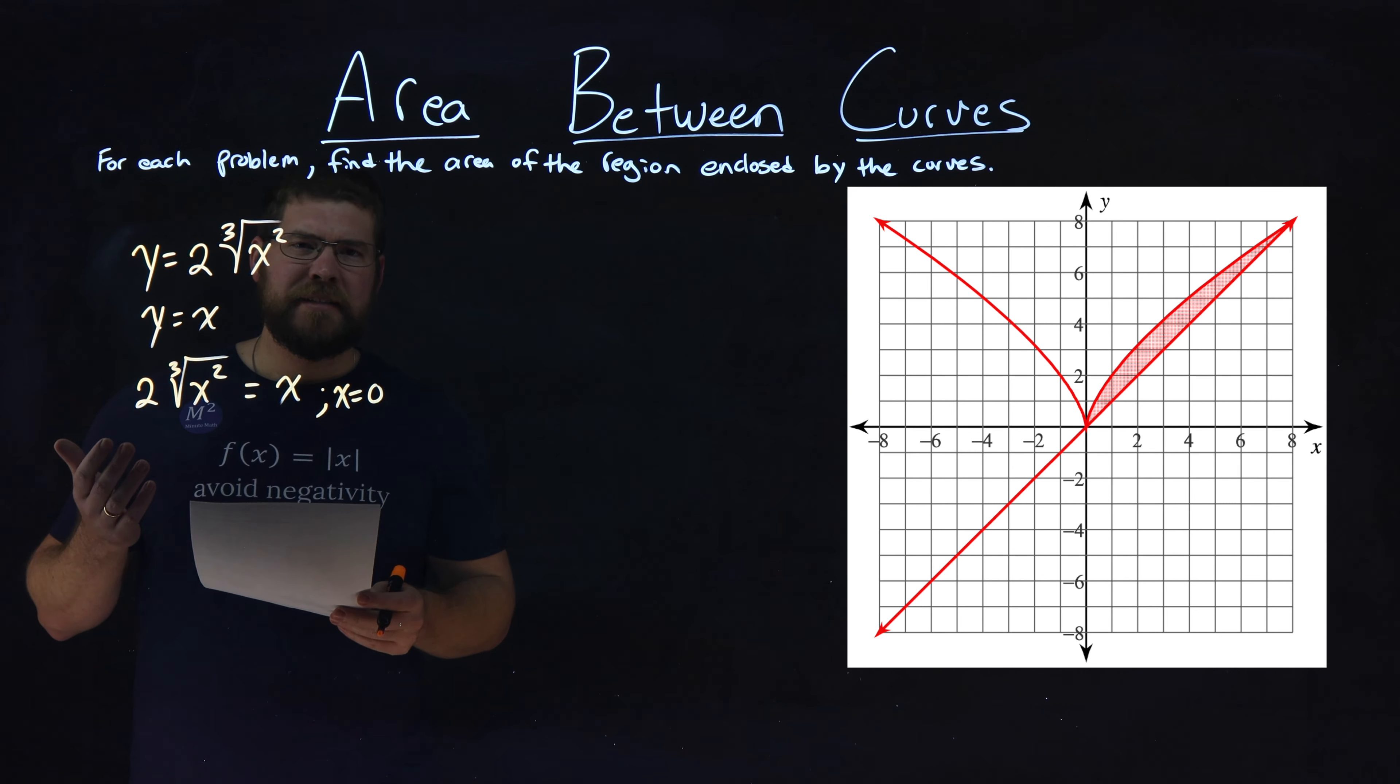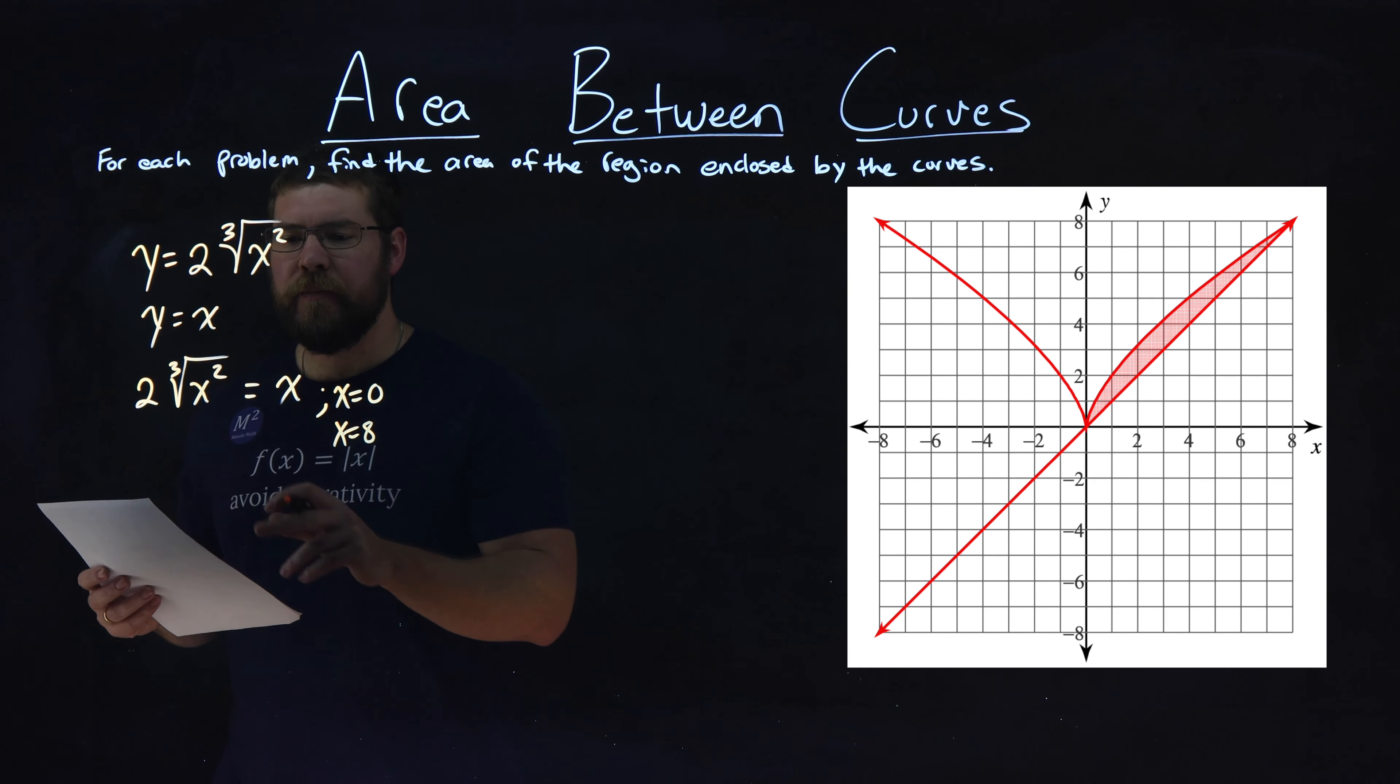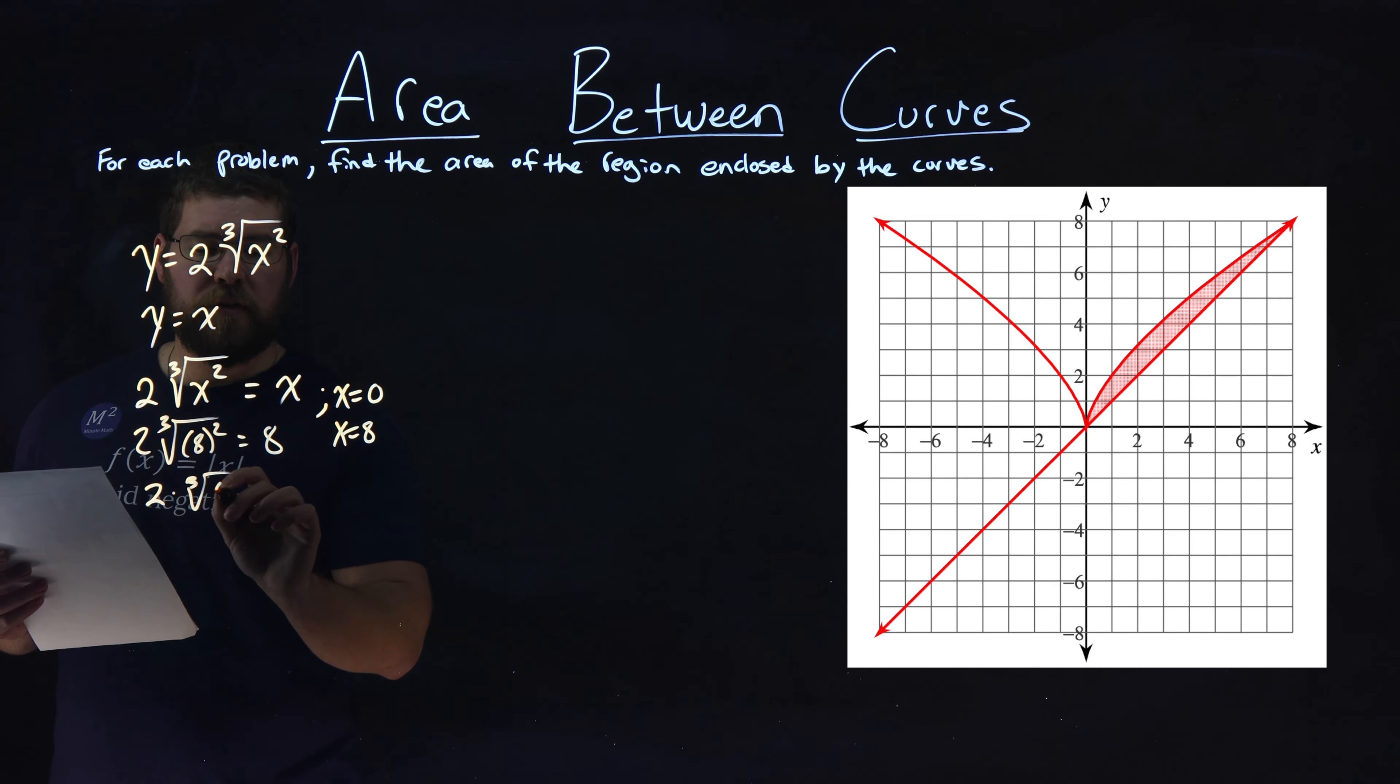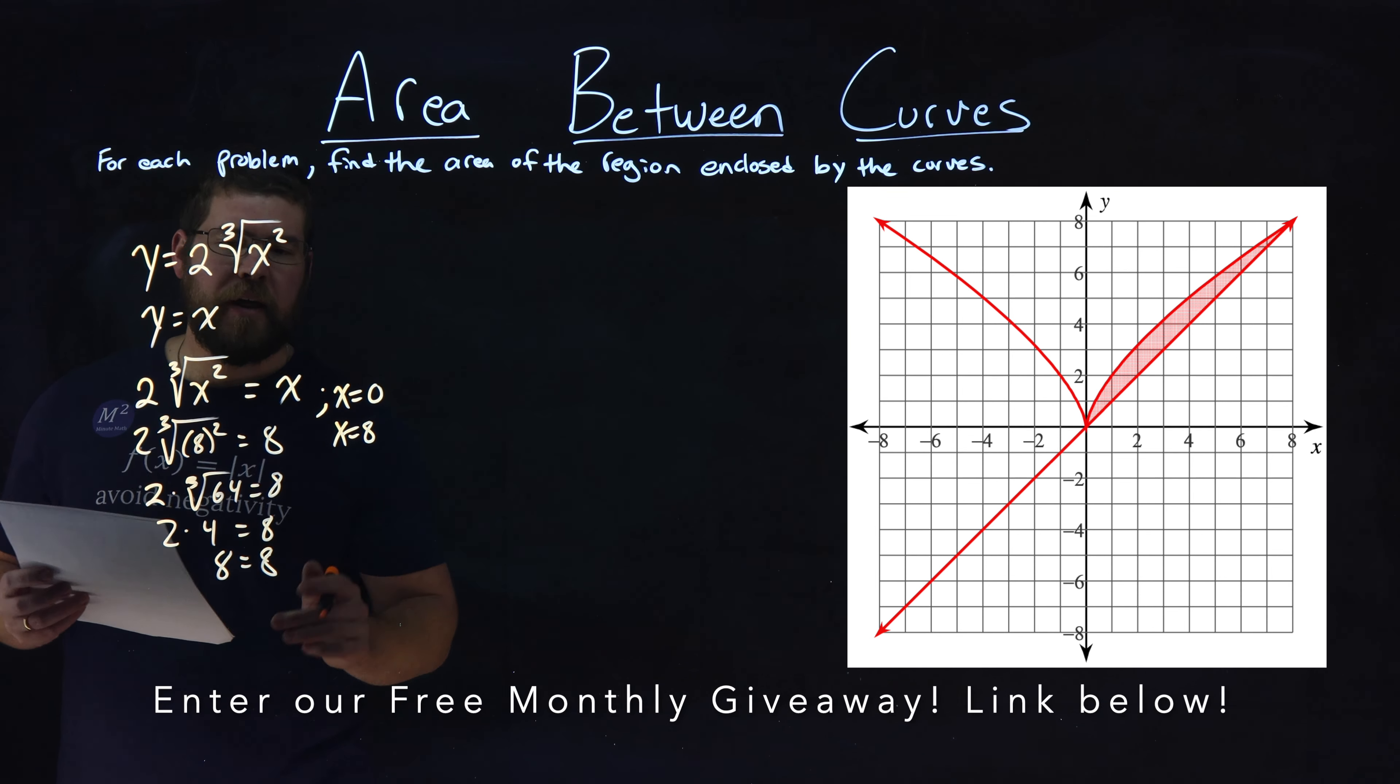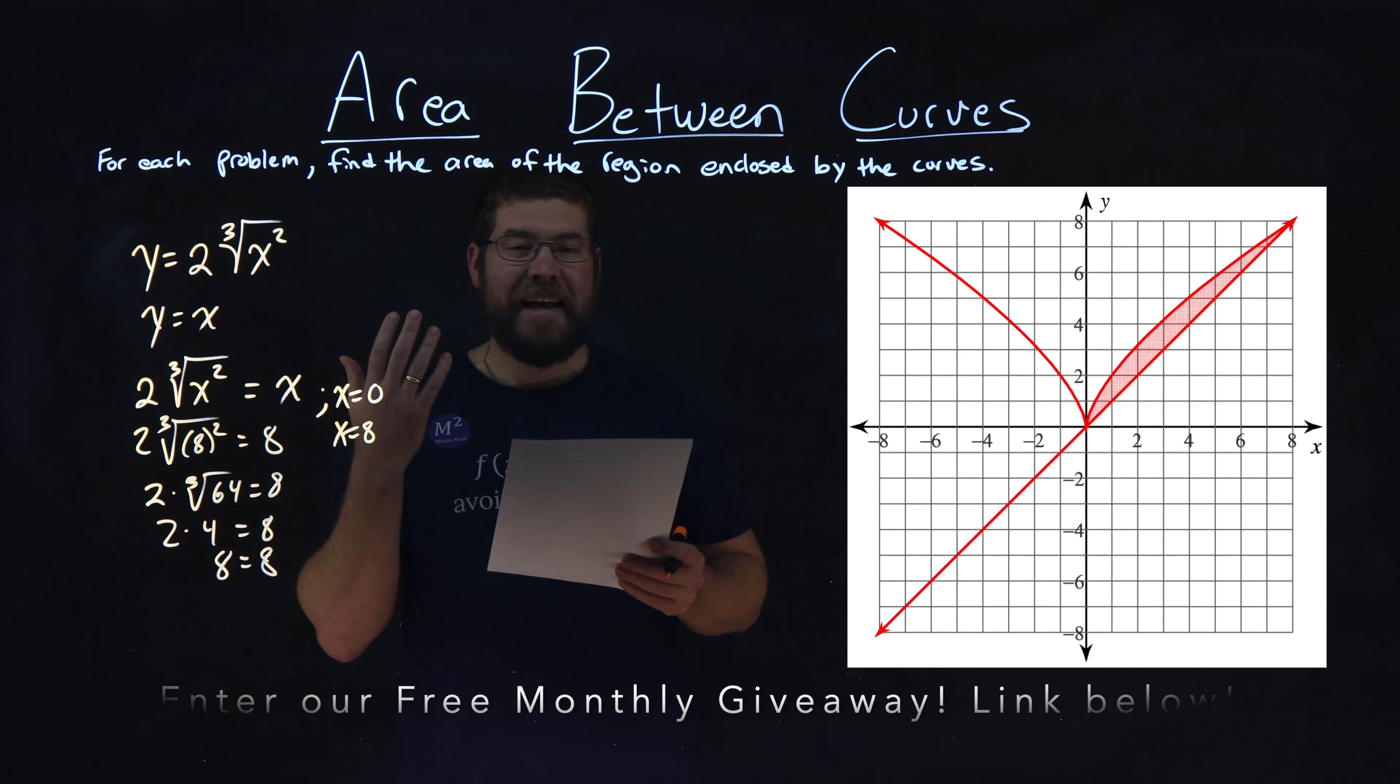The second one actually happens when x equals 8. We can see that here. If we plug in 8, third root of 8 squared equals 8. 8 squared is 64, so 2 times the third root of 64 equals 8. The third root of 64 is 4, so 2 times 4 equals 8. That comes with some practice simplifying, but we have our two values: x equals 0 and 8.